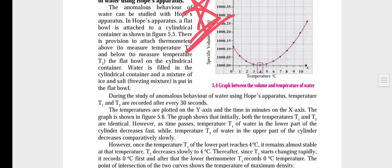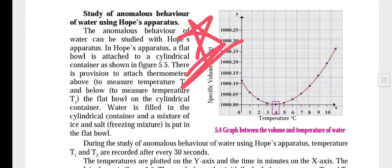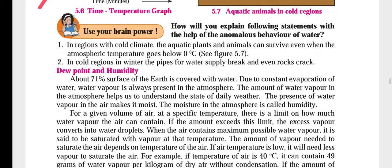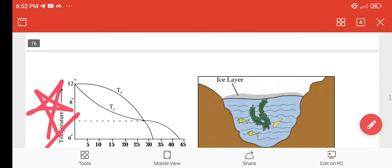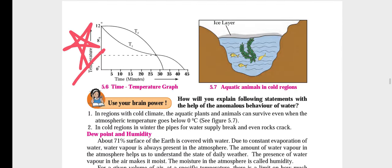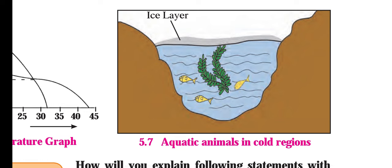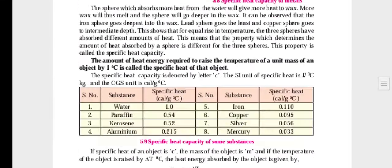Page number 65: we have the question on anomalous behavior of water — Hoppes apparatus. Page number 66: we have the temperature and time graph — that is important, please mark it. You have got anomalous behavior of water for aquatic animals in cold regions — explain this.